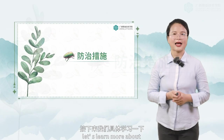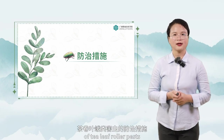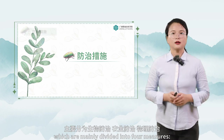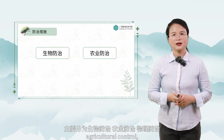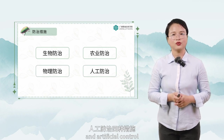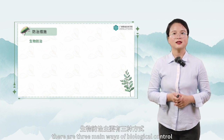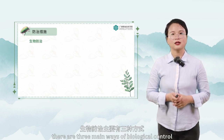Let's learn about the prevention and control measures of tea leaf roller pests, which are mainly divided into four measures: biological control, agricultural control, physical control, and artificial control. First, let's look at biological control. There are three main ways of biological control.